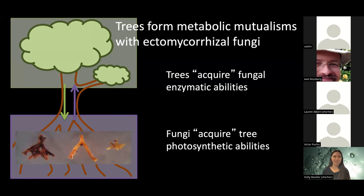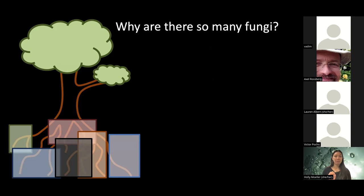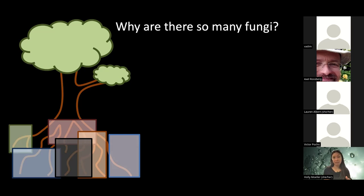At the interface between plant and fungal tissue, resource exchange takes place. Trees pay the fungi with photosynthates — carbon — and the fungi use that energy source to grow and reproduce, but also to spread through the soil and produce enzymes that break down recalcitrant soil organic matter and liberate nutrients, which they deliver to the tree. In the language of acquired metabolism, trees are acquiring access to enzymatic abilities that the fungi have but the tree does not, broadening their phenotype through this metabolic mutualism.